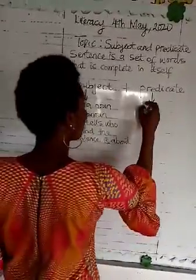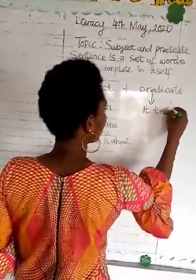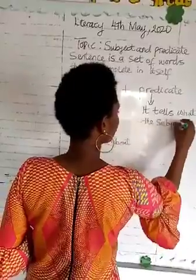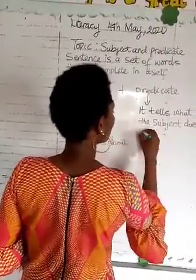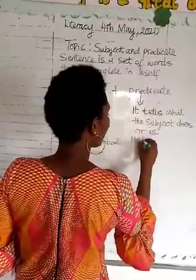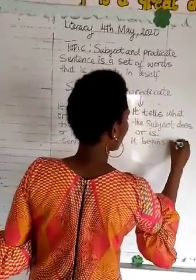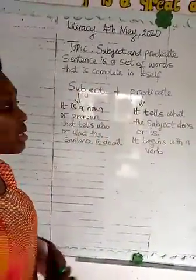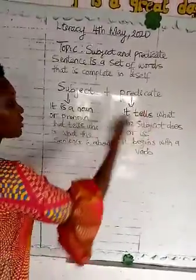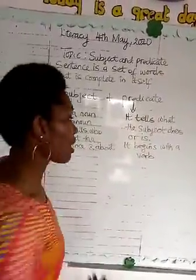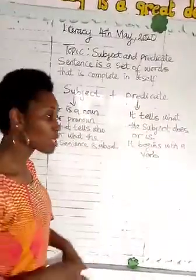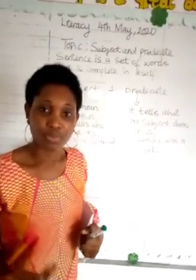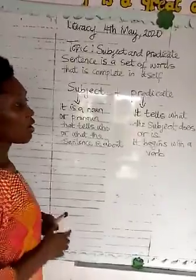Predicate — what's the predicate? The predicate tells what the subject does or what the subject is, and it begins with a verb. The predicate tells you what the subject, which is the noun or pronoun, does. And the predicate must begin with a verb.